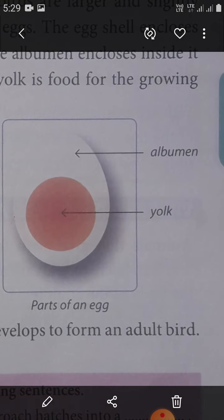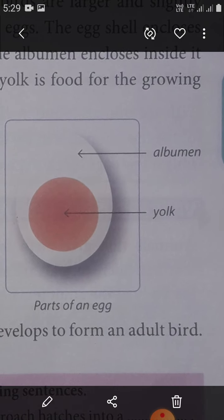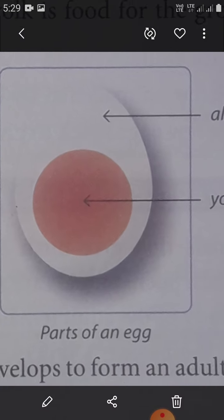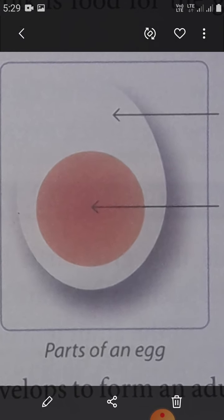Here students, this is the albumin — the egg shell encloses a white jelly-like substance called the albumin. And this is the yolk — the albumin encloses inside it a yellow-colored substance called the yolk.